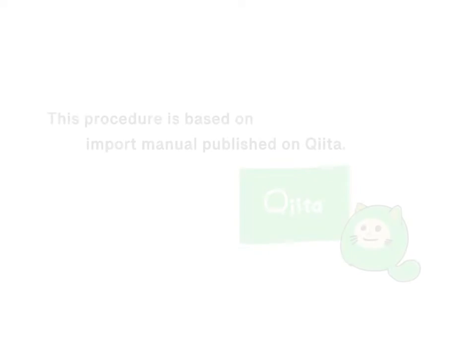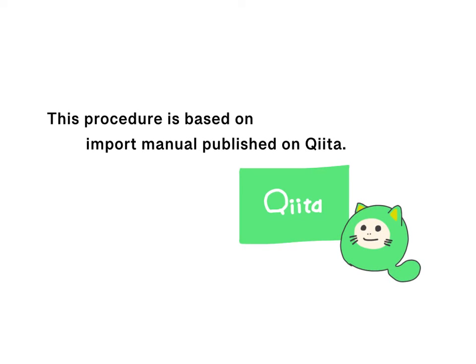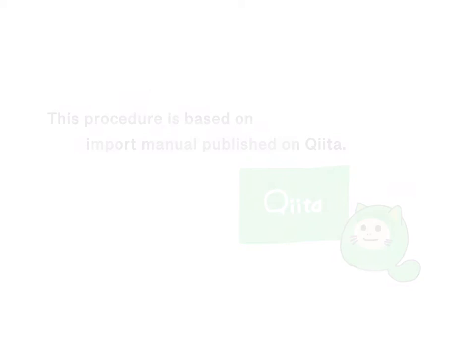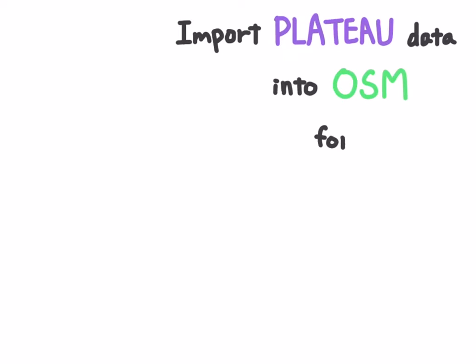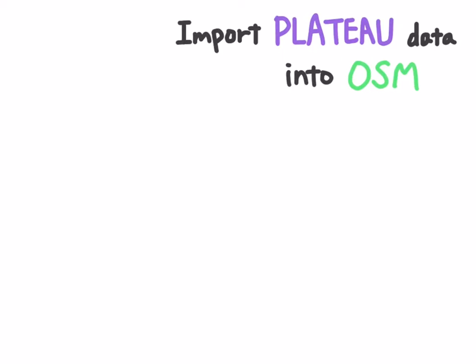Hi, in this video, we explain the procedure of importing part data to OpenStreetMap in an easy-to-understand way using graphic record. First, download the latest version of JABB and JOSM to your PC in advance. After that, it is time to start the import procedure.